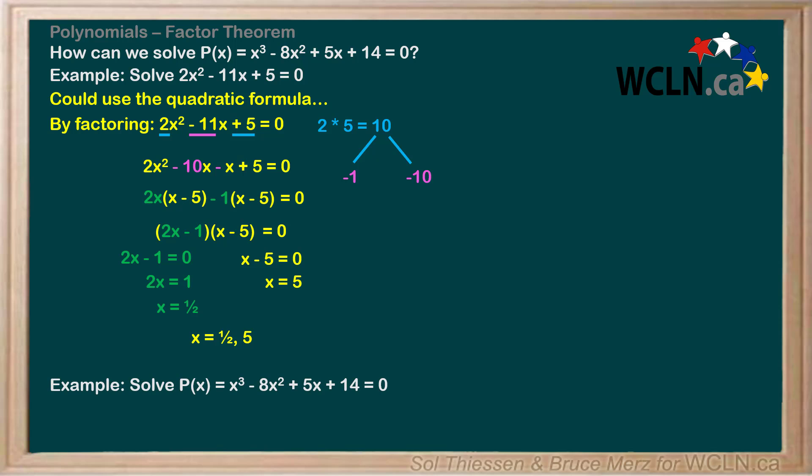Solve P(x) = x³ - 8x² + 5x + 14 = 0 from the beginning of the video. We want to apply the same approach of factoring to find the roots. Can you think of a way to factor it? Probably not yet, as this is where knowledge of the factor theorem becomes necessary.